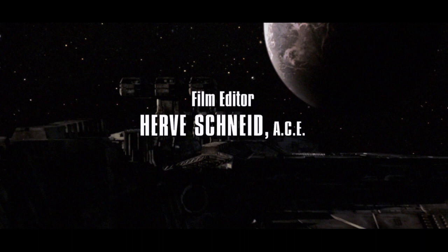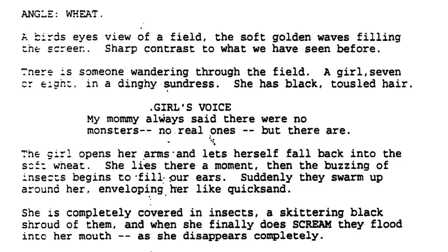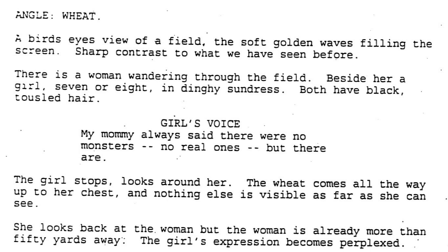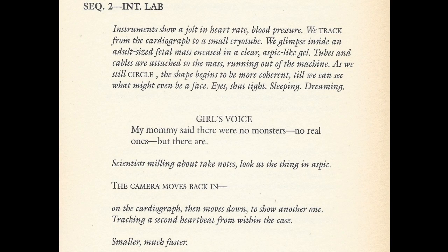The undated and 1995 scripts next show a corridor in the Auriga, followed by a fetal mass in gel, apparently dreaming. The 1996 draft skips the Auriga interiors and goes straight to a dream sequence mirroring a similar scene in earlier drafts: a woman walks through a wheat field with a young girl, and we get the girl's voice repeating Newt's line about monsters from Aliens. The girl is swamped with black insects and the wheat field turns into a sea of blood. The 1996 draft has just the girl alone in the field. The dream sequence is omitted from the published script and the film, though the voiceover is retained, now voiced by Ripley.